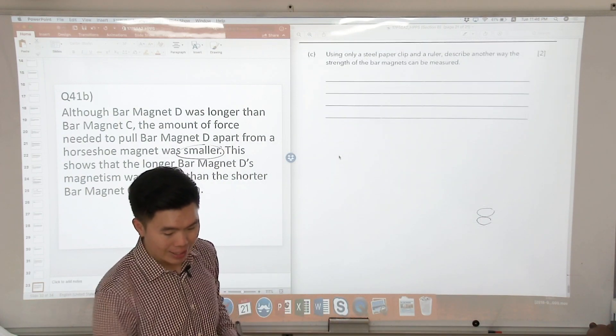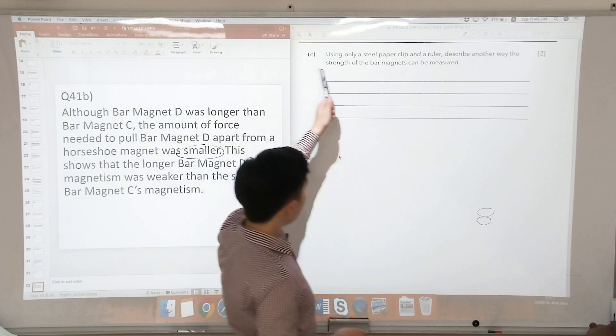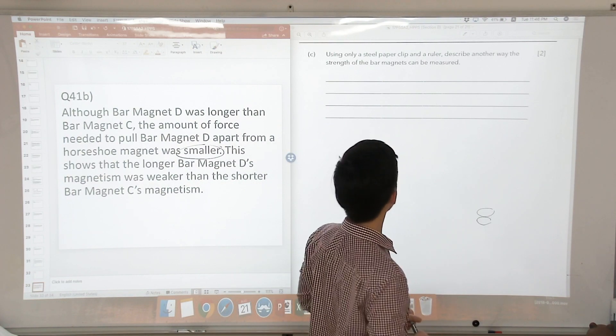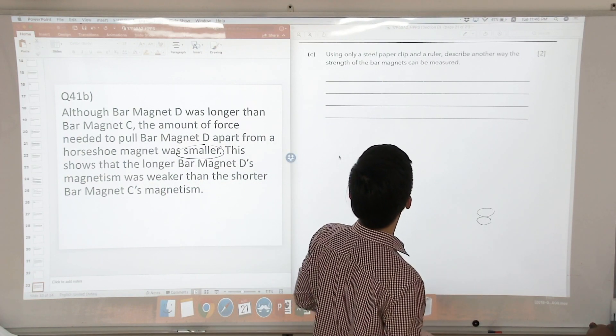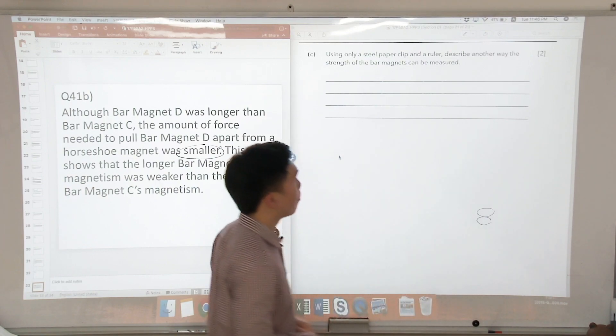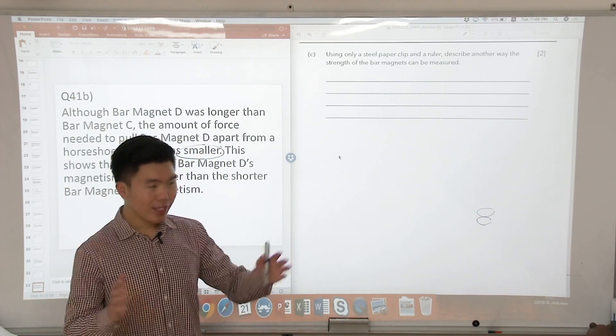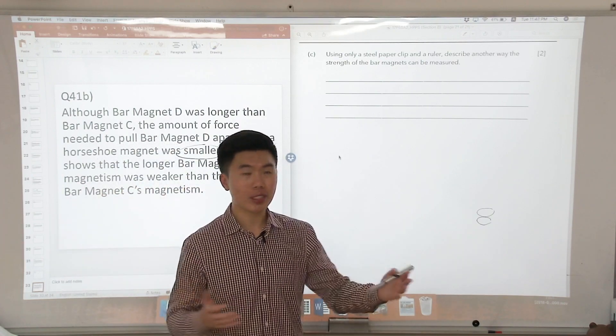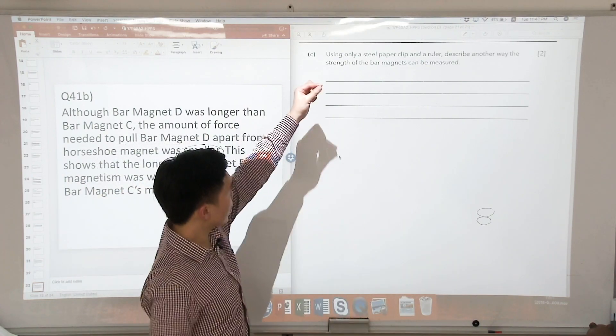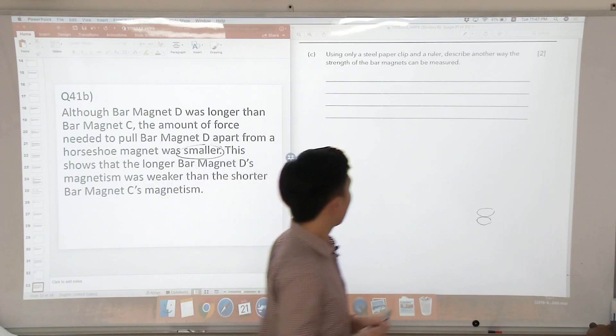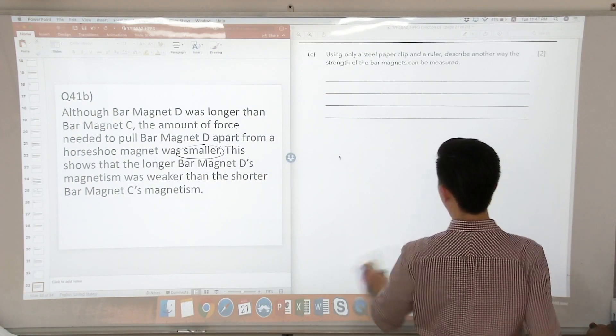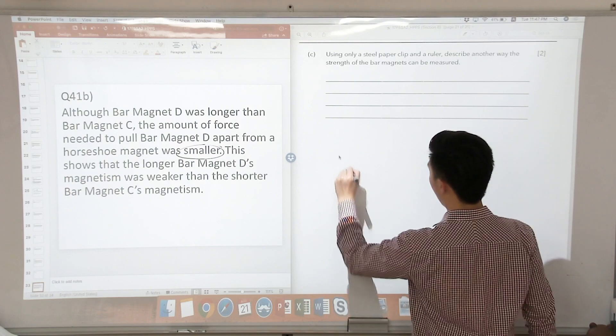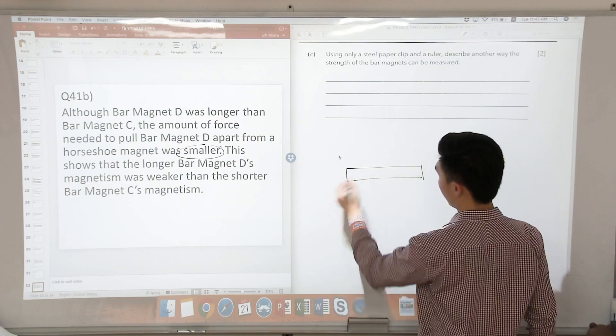And finally, let us look at part C. Using only a steel paper clip and a ruler, describe another way to find out what is the strength of the bar magnets. So this is a very simple experiment. You might even have done this in some of your school science practical. So I'm going to use a steel paper clip. I'm going to use a ruler. How am I going to determine? So I have my ruler here. For example, and this reading is maybe 0 cm.